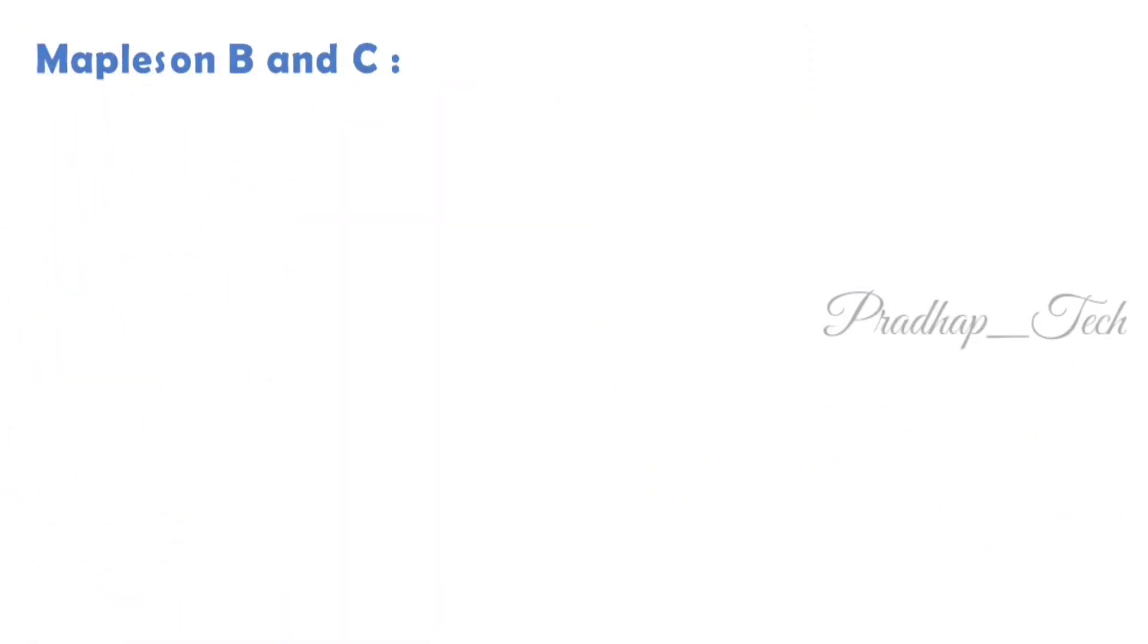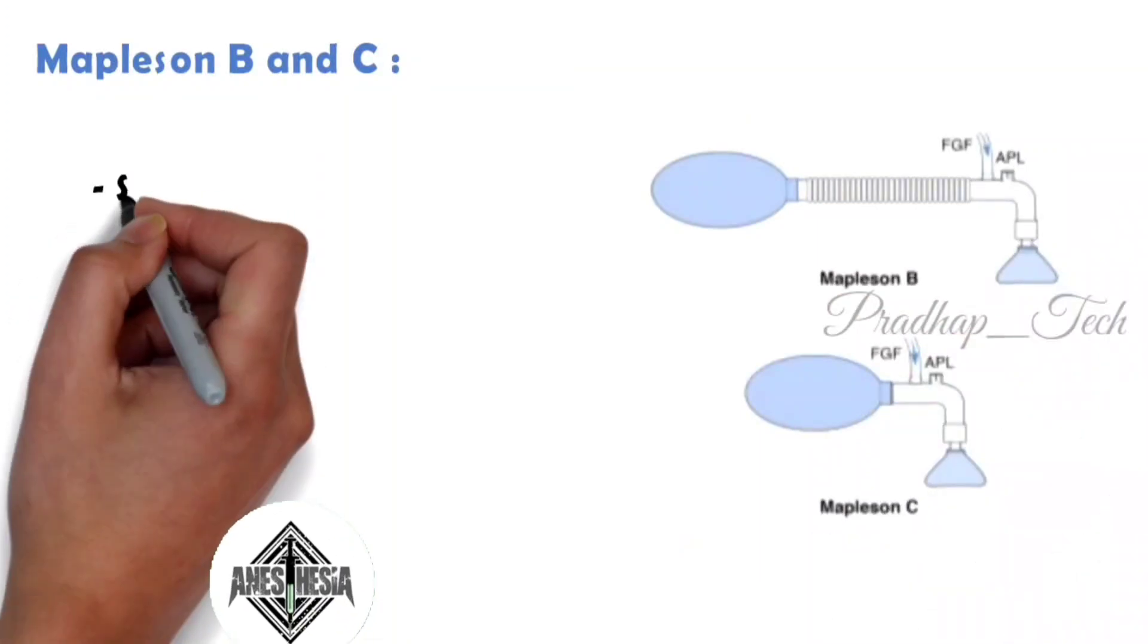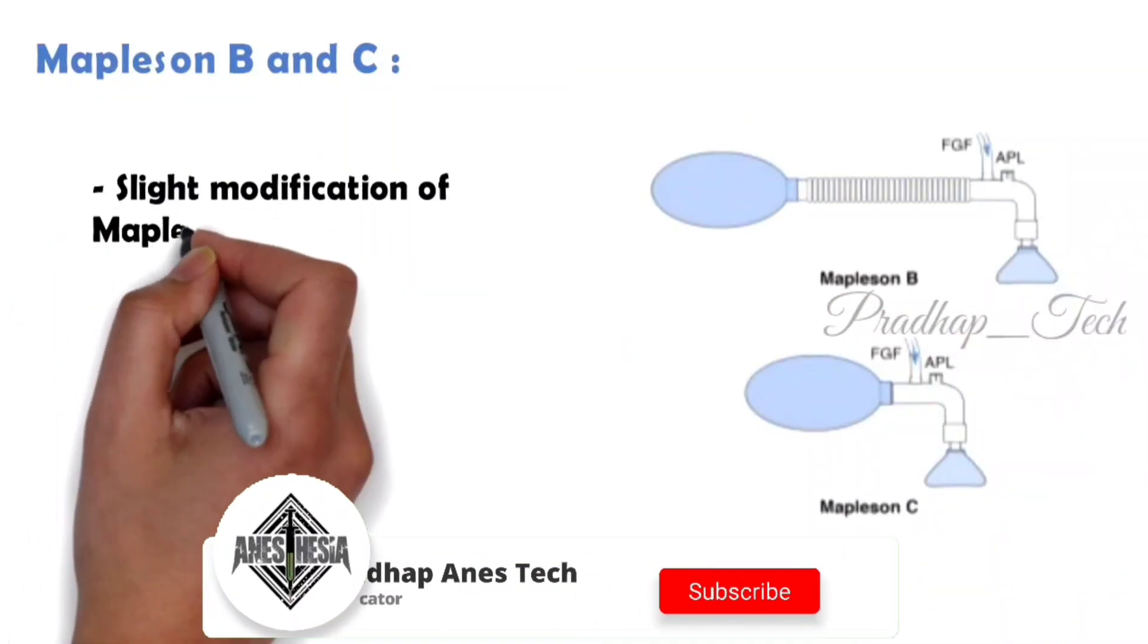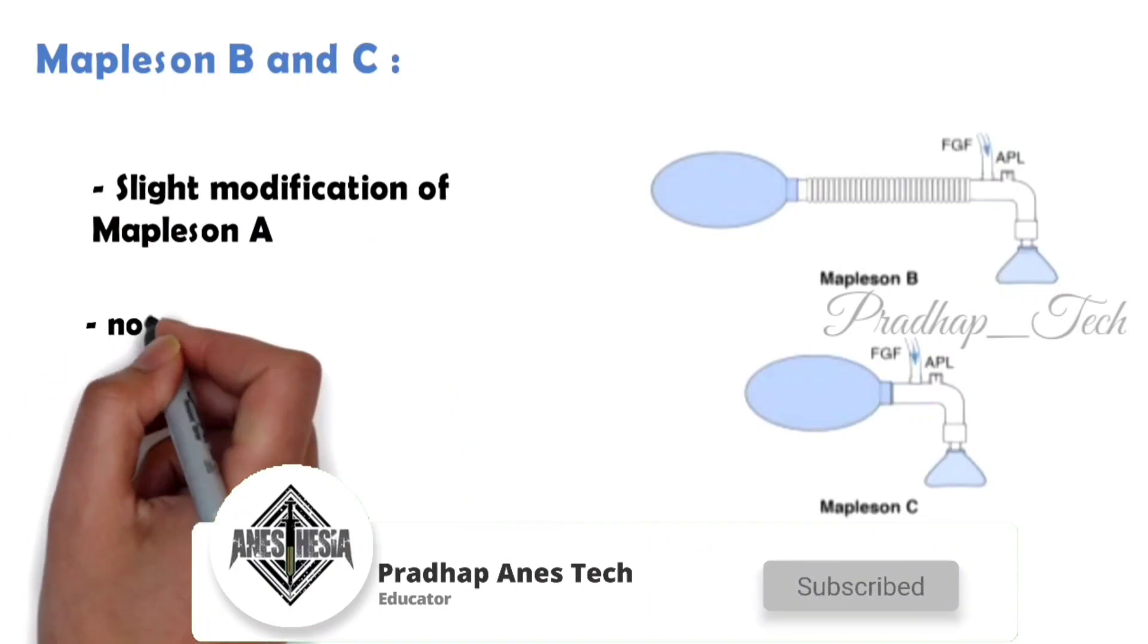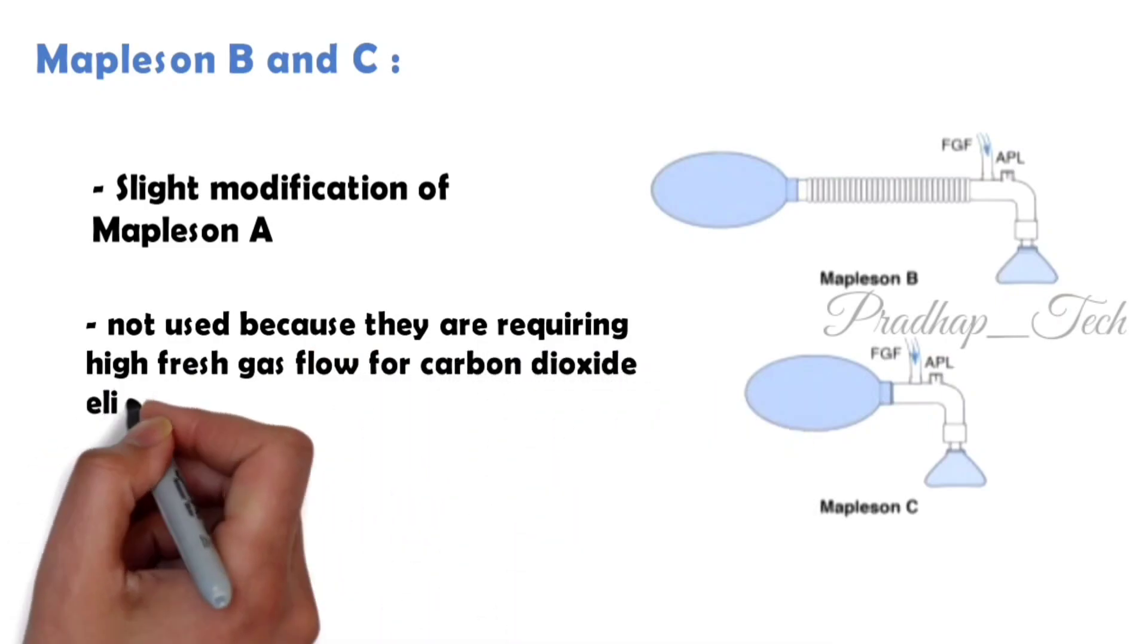Mapleson B and C are a slight modification of Mapleson A. These Mapleson B and C are not used because they require high fresh gas flow for carbon dioxide elimination.